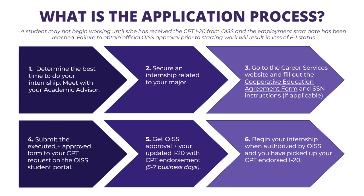Third, the CPT application is a two-step process. First, you must go to the Career Services website and fill out the Cooperative Education Agreement form — the link is provided on our website. If you have never worked in the U.S. before, you will likely also need to apply for a Social Security Card or SSN. Make sure to download the SSN application checklist on the Career Services website and follow those steps alongside your CPT application.